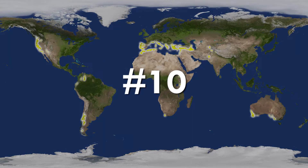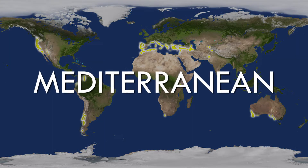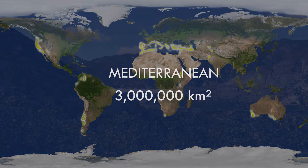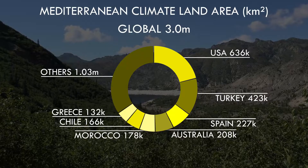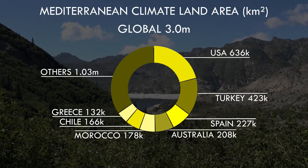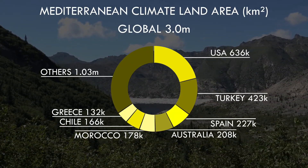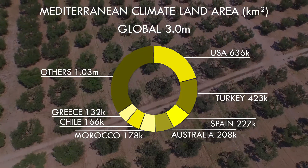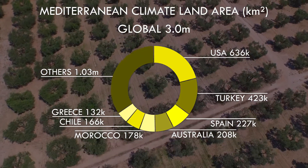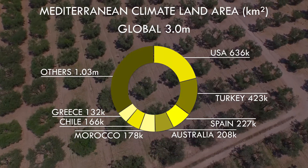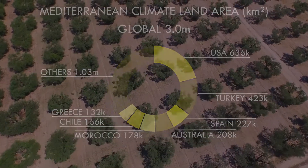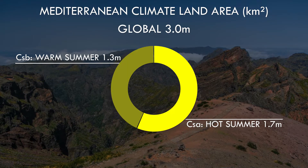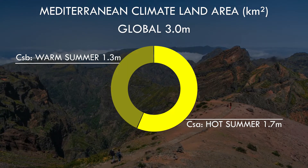At number 10, we have the oceanic's southern neighbour, the Mediterranean climate of dry summers along the west coasts of the temperate latitudes. The country with the largest single land area here is, interestingly, the United States, whose long west coast is almost exclusively of this type. Australia and Chile have some areas here, but the vast majority is given over to the countries around the sea to which this climate owes its name. The relative land areas of the hot and warm variants of this climate are pretty even, with CSA being slightly more widespread.